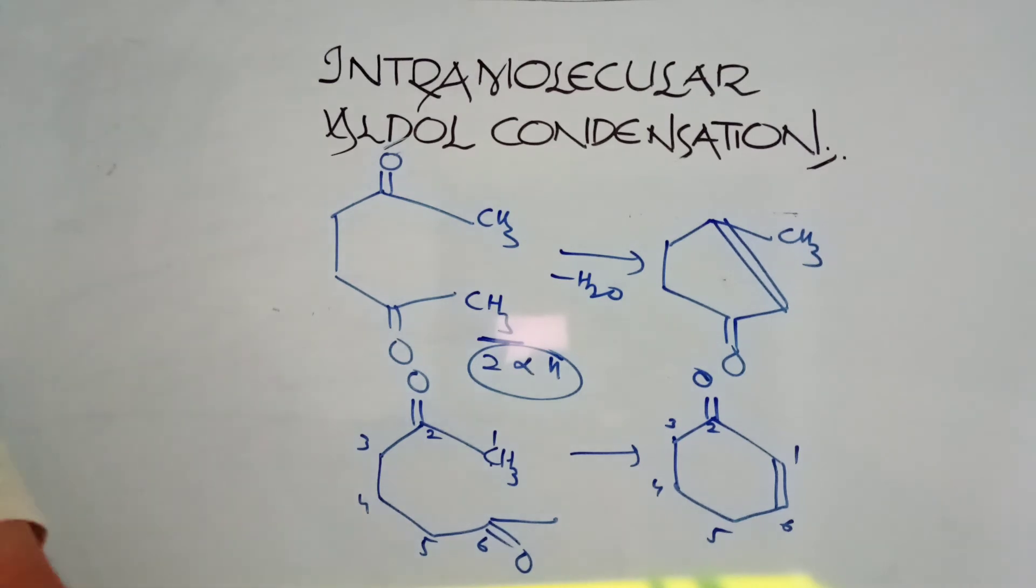This reaction is known as intramolecular aldol condensation. In the presence of strong dilute base, if we are having one-four or one-five diketones or dialdehydes, that means you get a five-member ring or a six-member ring. Generally five or six member rings are stable, so you can get this. Thank you.